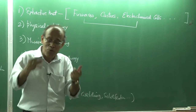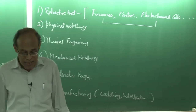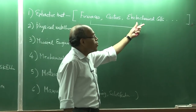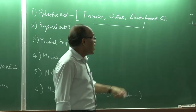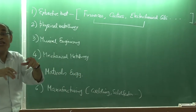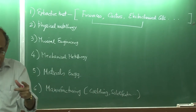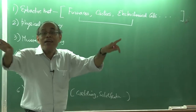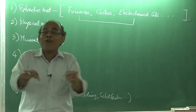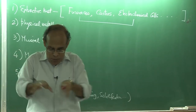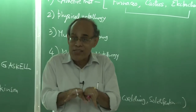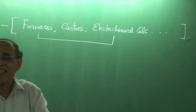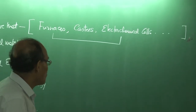In the Hall-Héroult cell, you have cryolite that dissolves alumina, and that alumina undergoes electrolysis. The movement of the ions towards the respective electrodes is influenced by the nature of the conduction currents generated there — electromagnetic forces and so on and so forth.